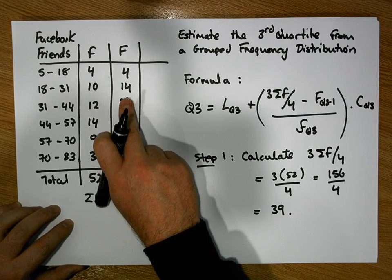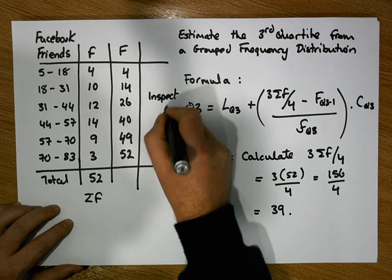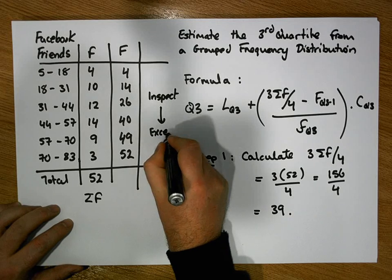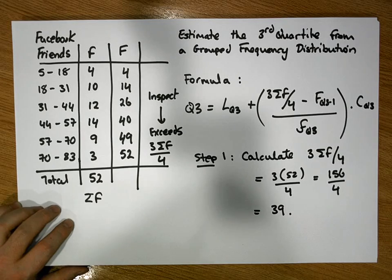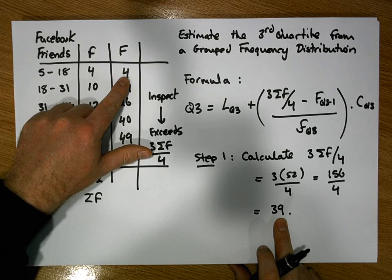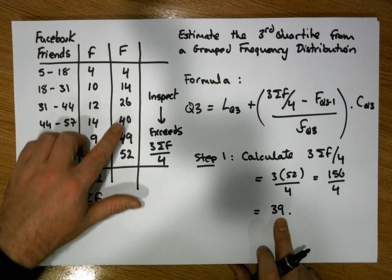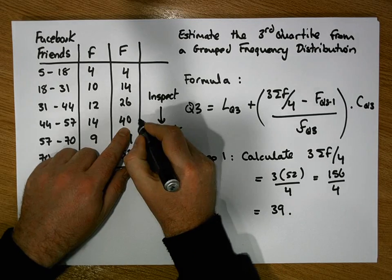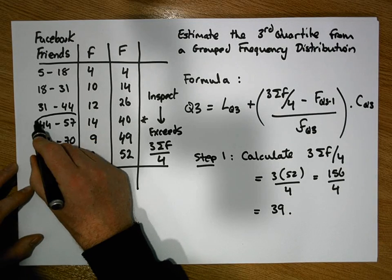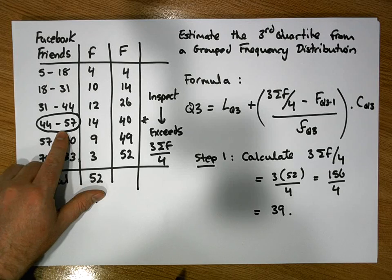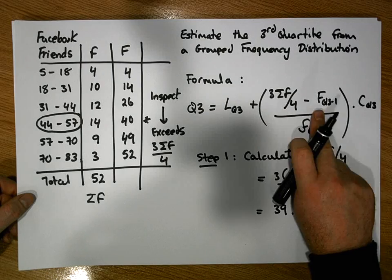Next, we inspect down the cumulative frequencies to find the first cumulative frequency that exceeds 3Σf/4, which is 39. Four is not bigger than 39, neither is 14, and 26 does not exceed 39, but 40 does exceed 39. This identifies the corresponding class as the third quartile class.